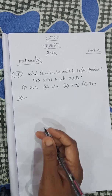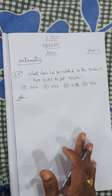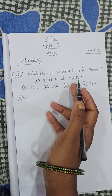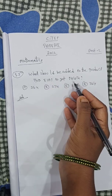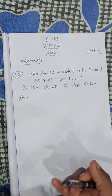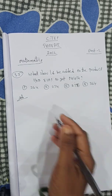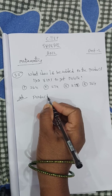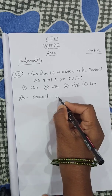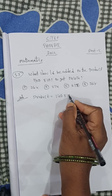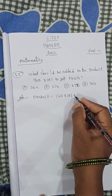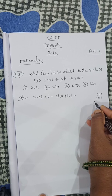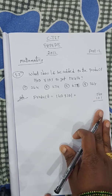In this question, first we find the product 140 × 101 to get the answer. So first, find the product — that is equal to... you know the multiplication, 3 digits.